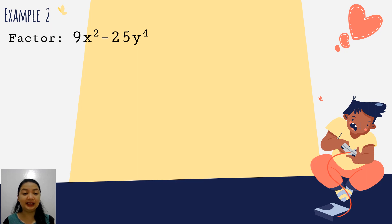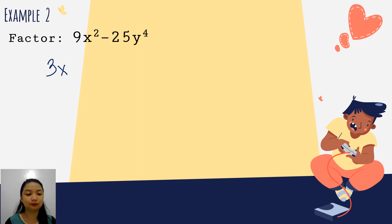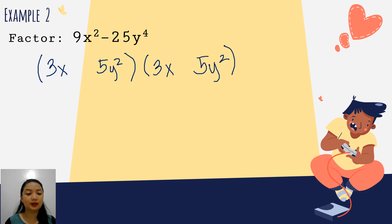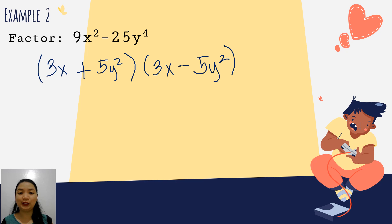Next example: 9x squared minus 25y to the fourth. We get the square root of 9x squared, which is 3x. The square root of 25y to the fourth is 5y squared. We include both in parentheses and express as sum and difference. So the factored form of 9x squared minus 25y to the fourth is the quantity 3x plus 5y squared times the quantity 3x minus 5y squared.